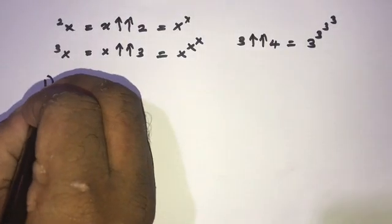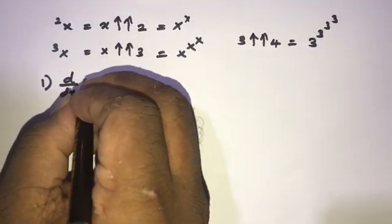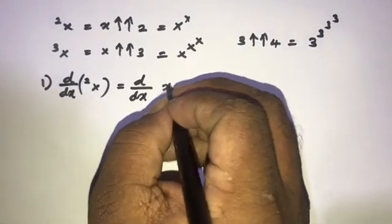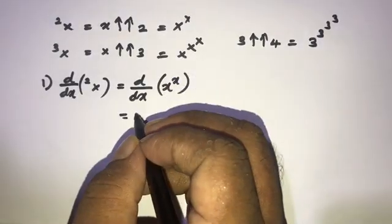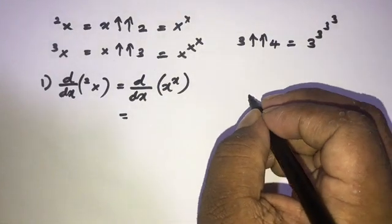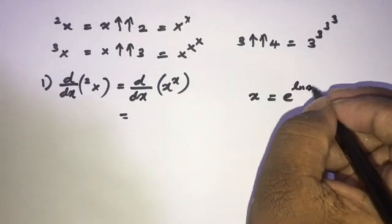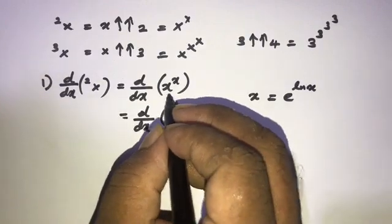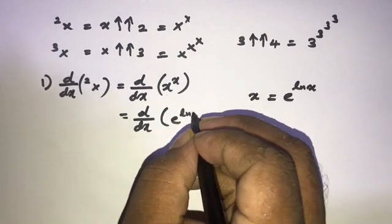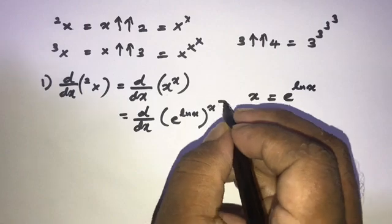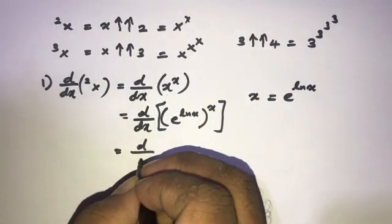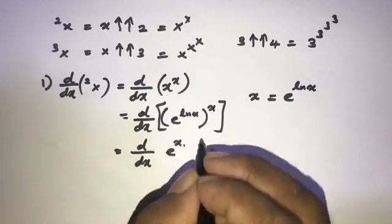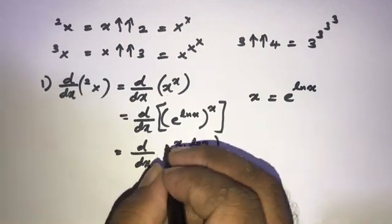Now let's go to question one: the derivative of x to the superpower of 2. We can write this as d/dx of x to the x power. In this case the base is x, so we can change it using e. We write x equals e to the ln x power, so x to the x power equals e to the x times ln x.